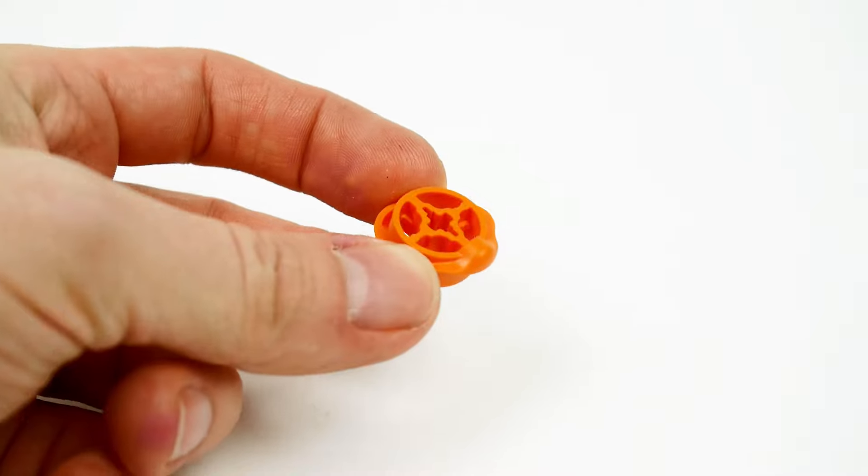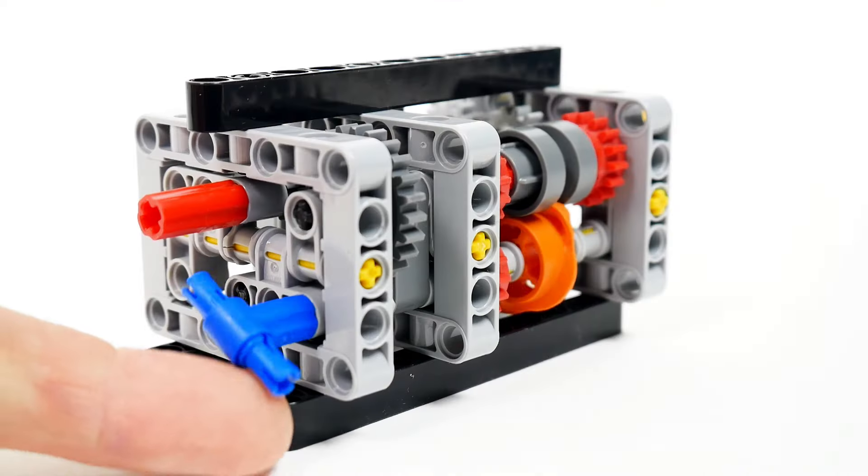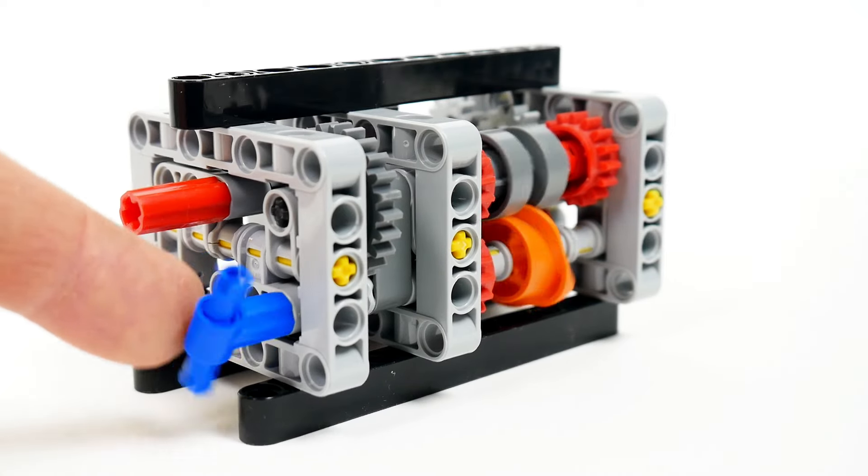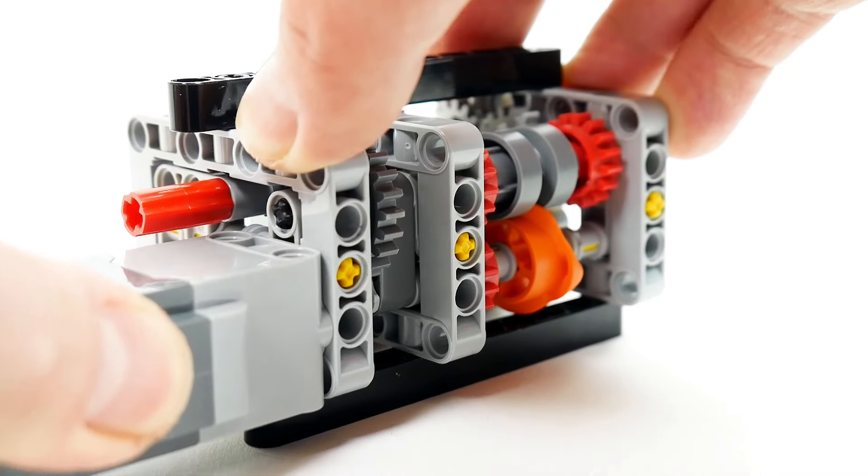The Lego rotary shifter piece allows us to build complex and compact transmissions, but the trick is that shifting requires rotating it repeatedly by precisely 90 degrees. This can be done using a powered up motor in a steering mode.